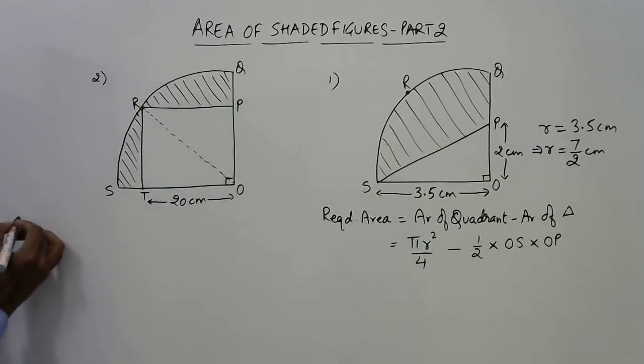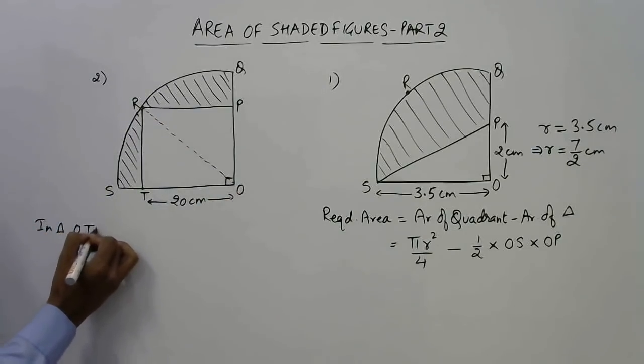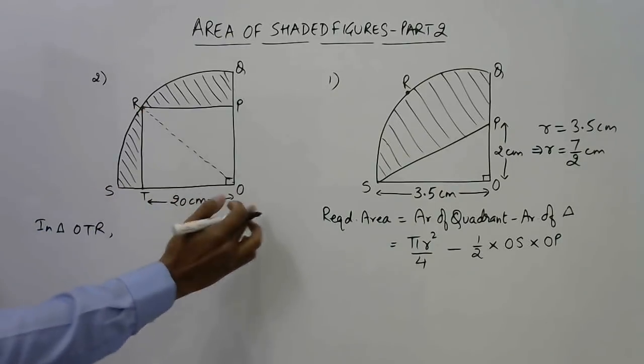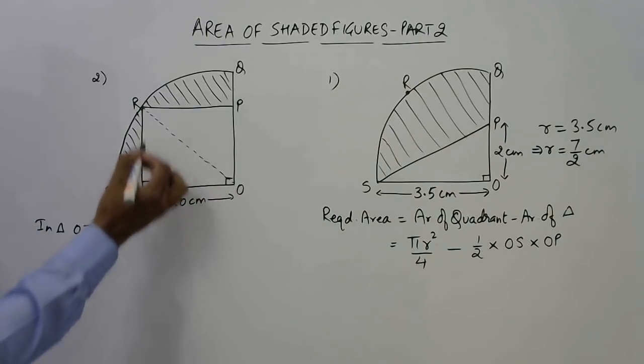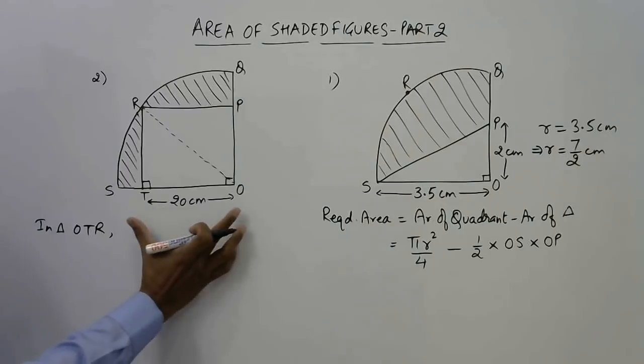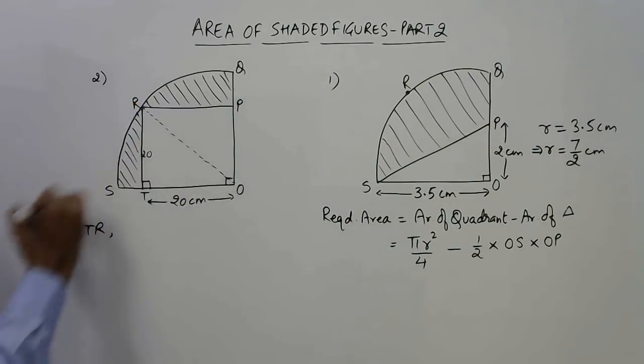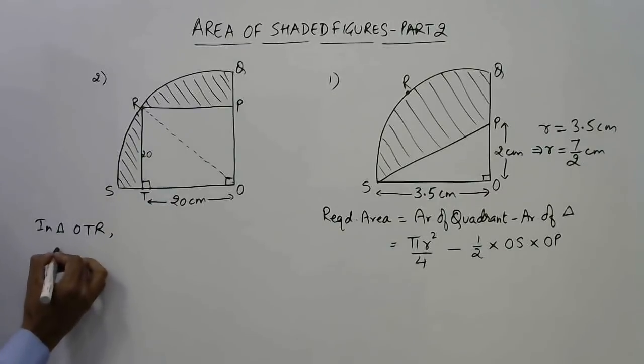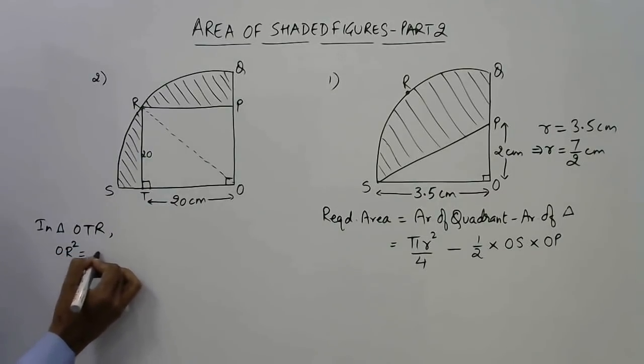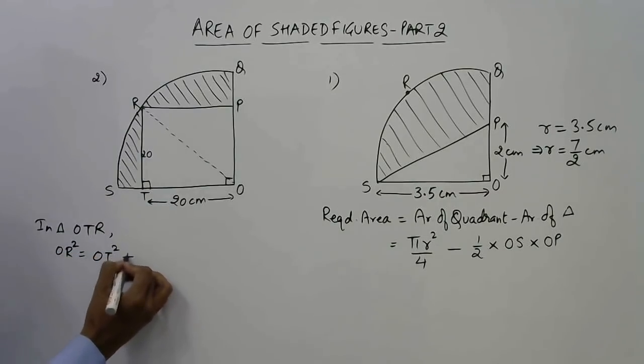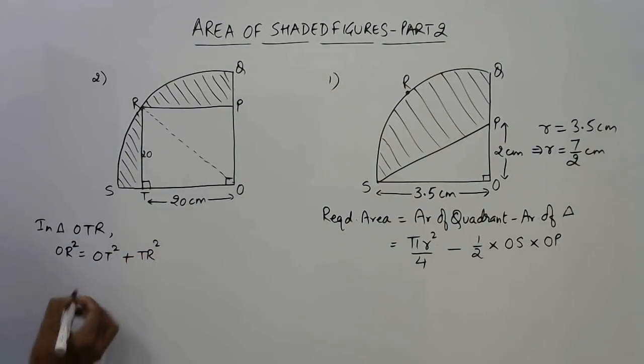First we will find out OR using the triangle OTR. This is a right angle triangle because it is a square, so apply Pythagoras theorem. If OT is 20, then TR is also 20. Now we can find OR. So OR² will be equal to OT² plus TR².